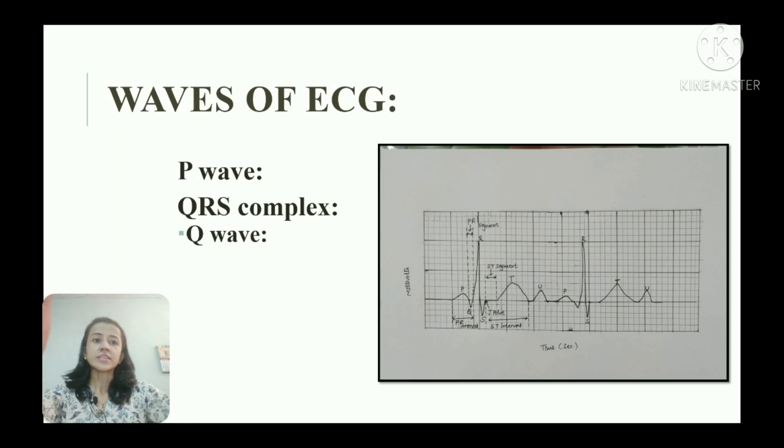Q wave is a small negative deflection and amplitude of Q wave is less than 0.2 mV. Duration of Q wave is less than 0.04 second. Beginning of Q wave represents invasion of mid portion of the interventricular septum by excitation. Q wave may not be visible always.